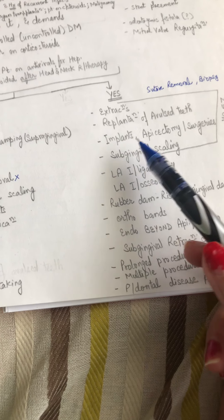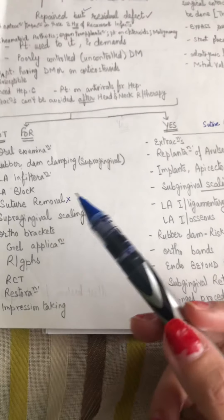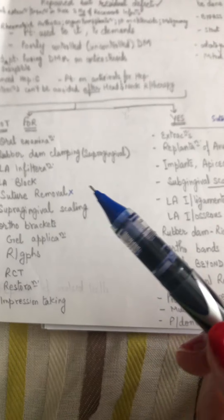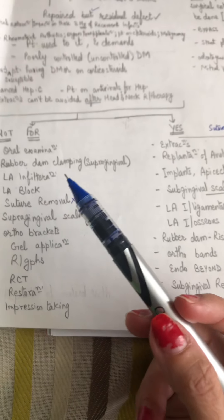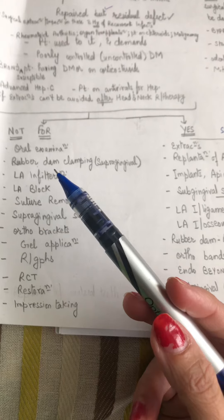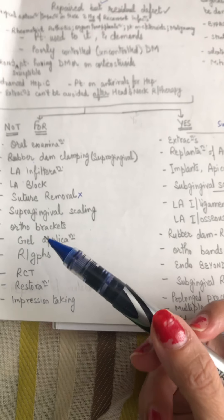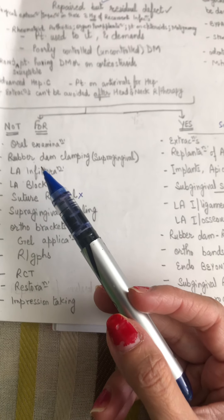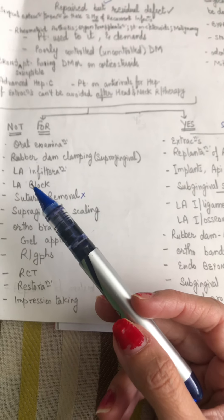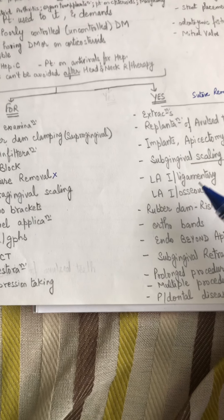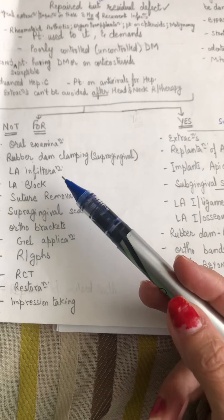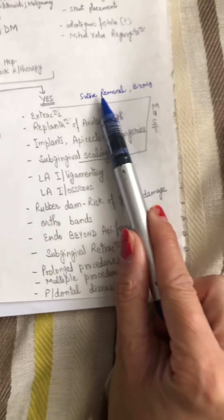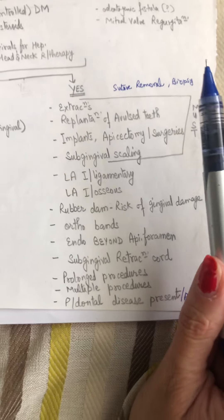Implants — yes, you need it. Supragingival scaling — you don't need it. Subgingival scaling — yes, you need it. Restorations — no, you don't need it. Regular infiltrations and block injections — you do not need it. Intraligamentary and intraosseous — yes, you need it. Suture removal — yes, you need it.